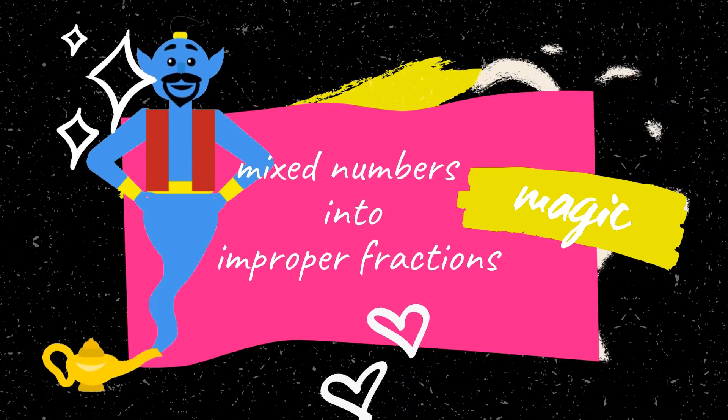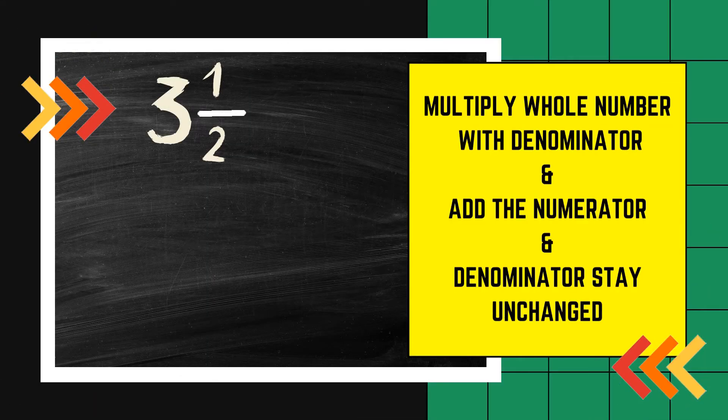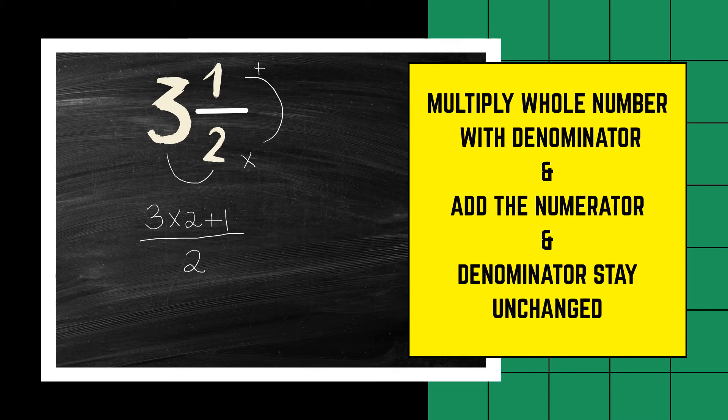Now we are going to perform a bit of magic and turn mixed numbers into improper fractions. To convert a mixed fraction into a fraction, we start off by multiplying the whole number with the denominator. In this instance we would go 3 times 2. Hereafter we add the numerator, plus 1. The denominator always stays unchanged, 2. We would do the calculations. 3 times 2 is 6 plus 1 is 7. And therefore the mixed fraction 3 and a half as an improper fraction would be 7 over 2.